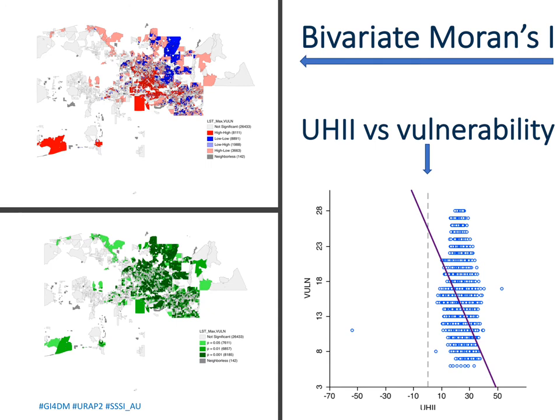This slide shows findings from bivariate Moran's I analysis for Phoenix. The dark red and dark blue areas of the spatial autocorrelation map indicate the relationship between high vulnerability and high land surface temperature, and low vulnerability and low land surface temperature, respectively. Corresponding shades of dark green are shown in the significance map. This indicates significant spatial relationships between vulnerability and heat exposure in Phoenix.